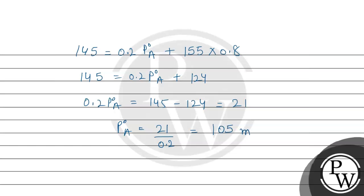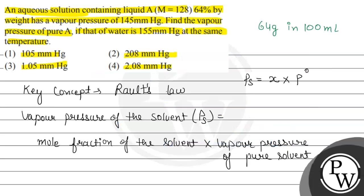This is in units of mmHg, and this is the answer to the question. Looking at the options, this corresponds to option number 1: 105 mmHg. So the answer is option 1 — 105 mmHg — whereas options 2nd, 3rd, and 4th are incorrect. Hope you understood it well, best of luck.